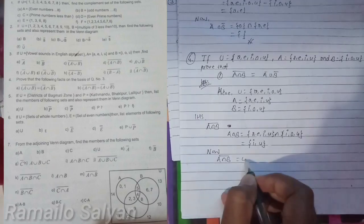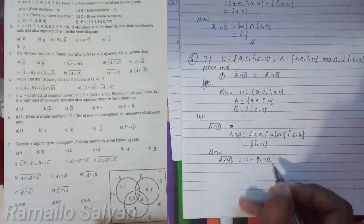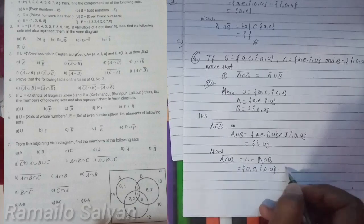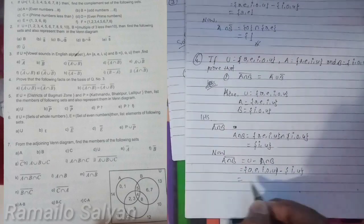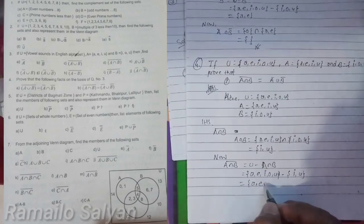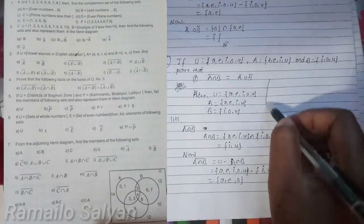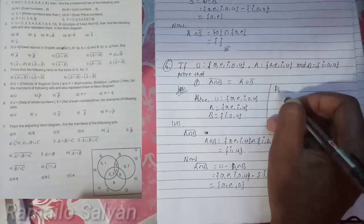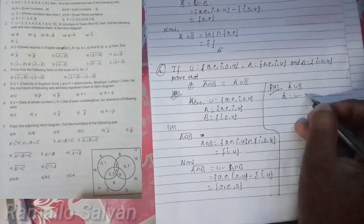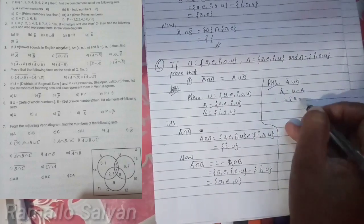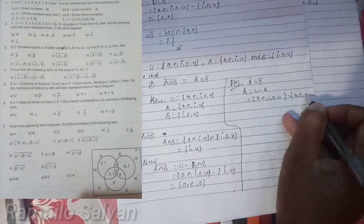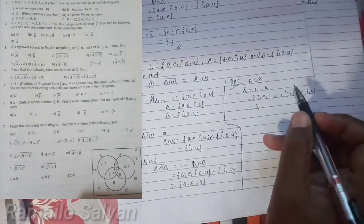Now find (A intersection B) complement = U difference (A intersection B). Members of U are {A, E, I, O, U} and members of A intersection B are {I, U}. The only remaining members of U are {A, E, O}, so (A intersection B) complement = {A, E, O}.